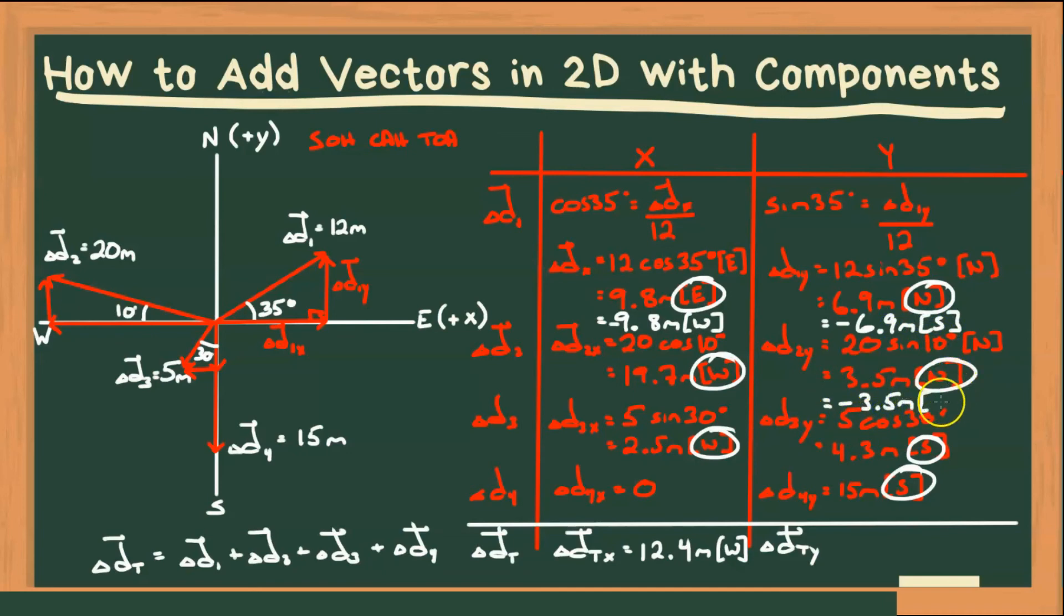Then if I add all of our souths, we get a total displacement in Y of 8.9 meters south.